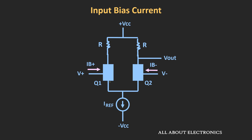If this op-amp is constructed using bipolar transistors, these biasing currents are basically the base current of the transistor. And if the op-amp is designed using MOSFETs or JFETs, these biasing currents are the gate current of those transistors. The direction of these biasing currents depends upon the type of transistors used in the development of the op-amp. For example, if the differential amplifier is designed using NPN transistors, these biasing currents are entering into the op-amp, while in the case of PNP transistors, these biasing currents go in the outward direction.